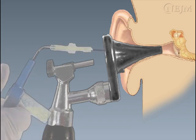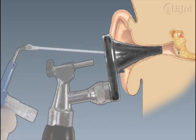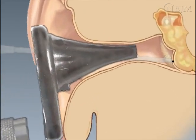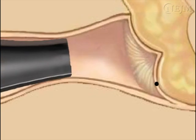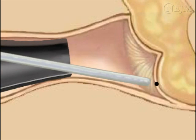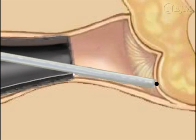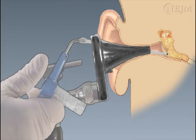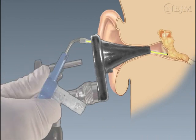Use a second tympanocentesis aspirator with a flexible catheter to suction any remaining pus from the middle ear. Insert the catheter through the speculum and place it over the opening in the tympanic membrane made by the needle. The catheter should not go through the tympanic membrane. This step also clears debris in the external auditory canal and may enhance visualization of the tympanic membrane at future visits.